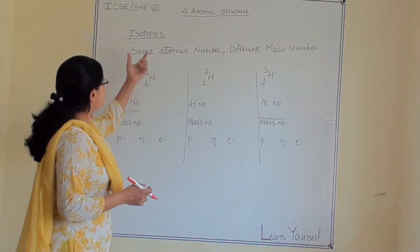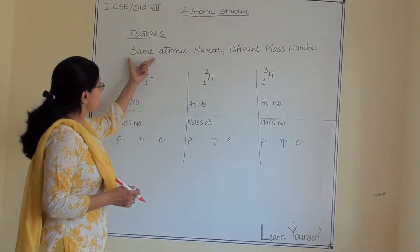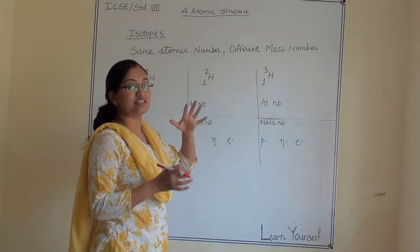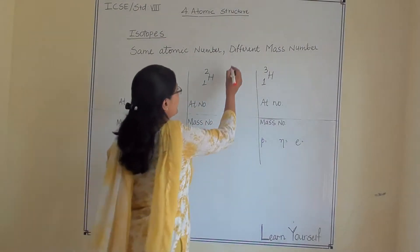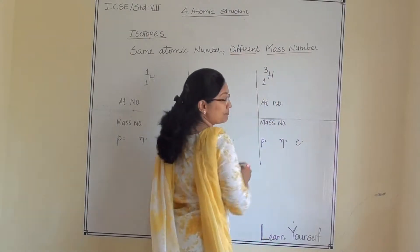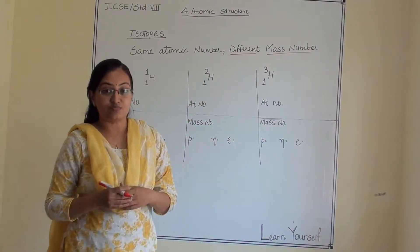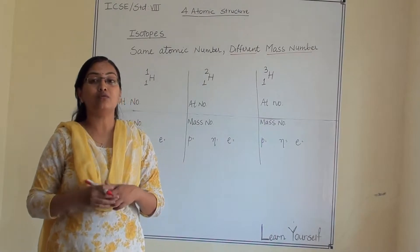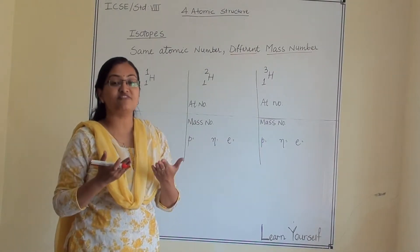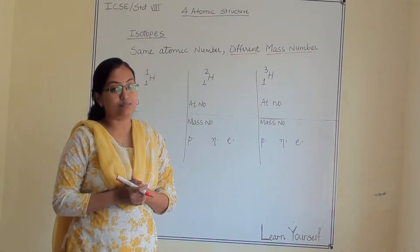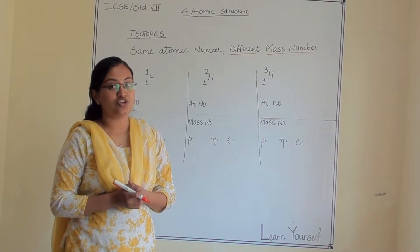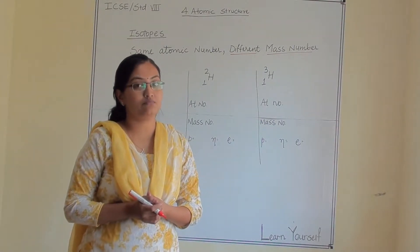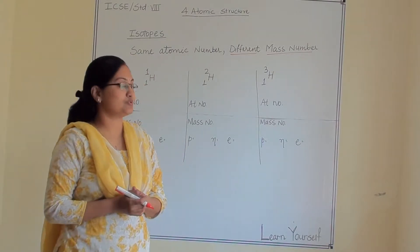What are isotopes? An element has the same atomic number but a different mass number. Same atomic number is shared, but they do have different mass numbers. The elements which have the same atomic number but different mass numbers are known as isotopes.